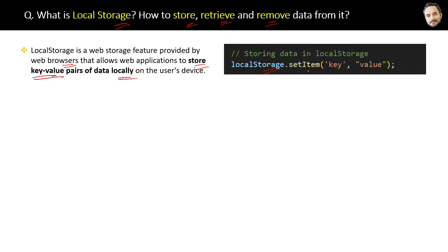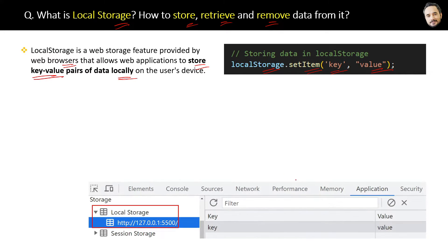This API has the setItem method that will accept two parameters: one is the key and another is the value. You can store any key-value pairs in local storage. Here is a screenshot of the developer tools in the browser.